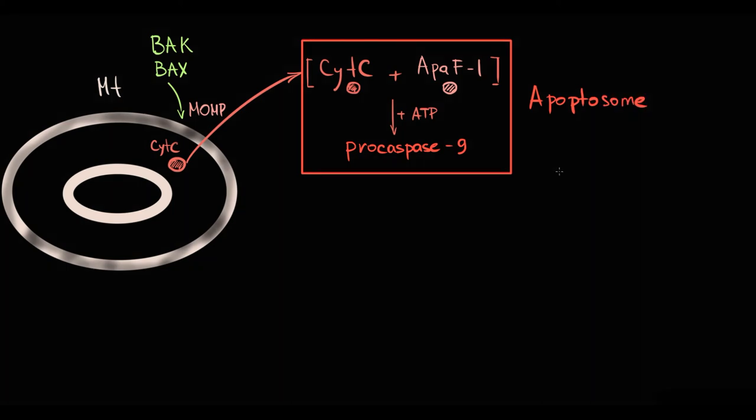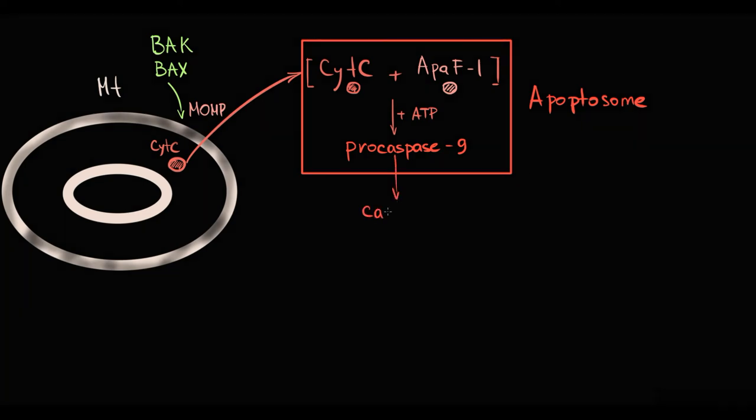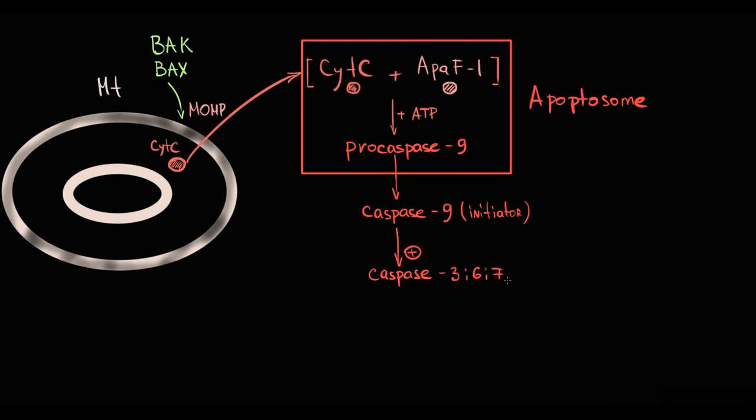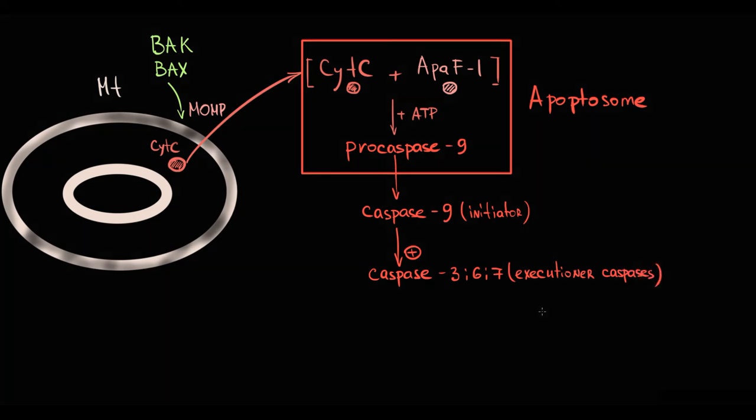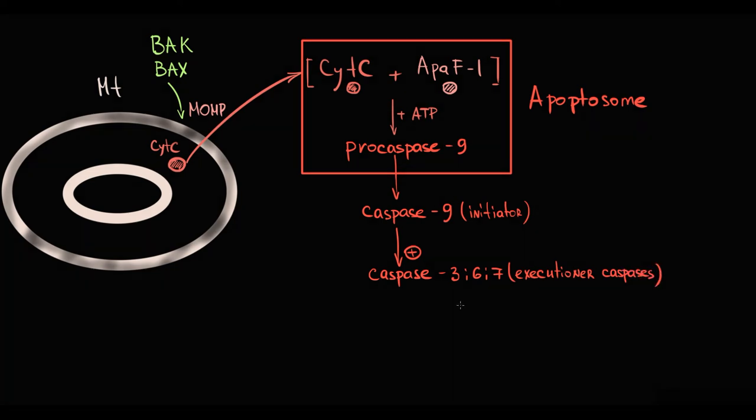In apoptosome, inactive procaspase 9 is converted to its active form caspase 9. Caspase 9 is called initiator caspase, because it activates downstream caspases, such as caspases 3, 6, and 7. They're called executioner caspases, because they have proteolytic activity. They cleave intracellular proteins, and by this they cause severe structural damage to the cell.